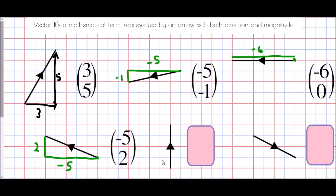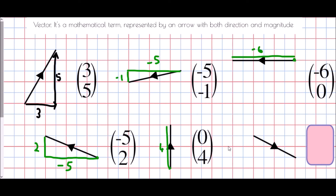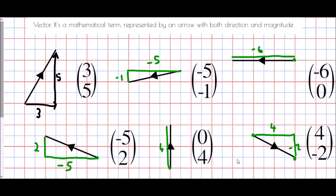For the fifth arrow, we do not move left or right — so that is zero — but we go four places up, giving a vector of zero, four. Finally, from the starting point I move four places to the right (positive) and then two places down (negative), so my vector is four, negative two.